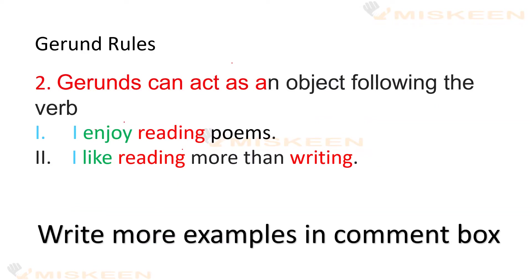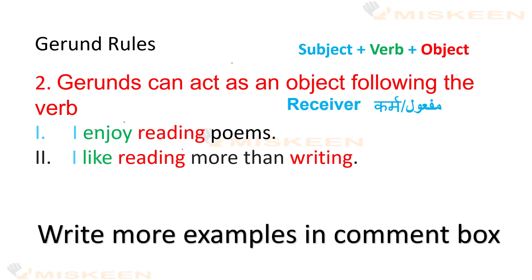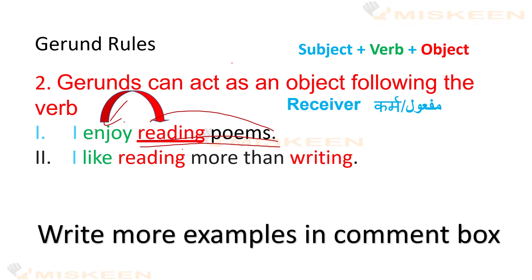Gerund Rule No. 2: Gerunds can act as an object following the verb. Jumlye me object jis bhe kaam ho raha hai. I enjoy reading poems — yehaan par enjoy jo verb hai woh humara main verb hai. Reading poems yeh humara object hai — kyunkiy aap kya enjoy kar rahe hai? Hum poem ko parhna enjoy kar rahe hai. Or yeh enjoy ke baad aata hai — after the verb.